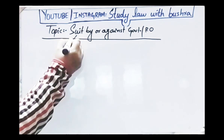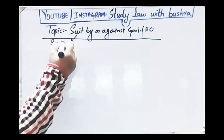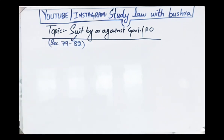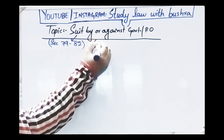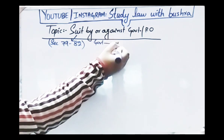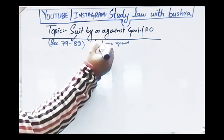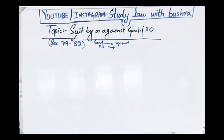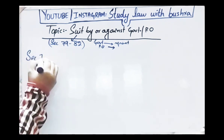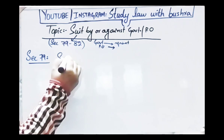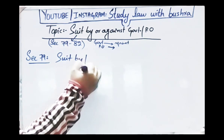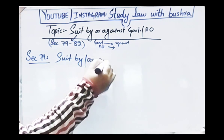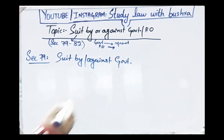This topic is explained from section 79 till section 82 of CPC 1908. If the government files a suit, or a suit is filed against the government, or if any public officer files a suit, or a suit is filed against a public officer, then what will be the procedure? Sections 79 to 82 discuss this procedure. Let's start with section 79.